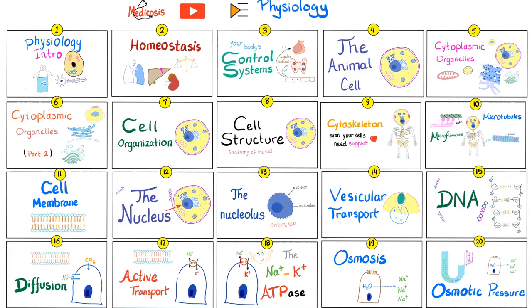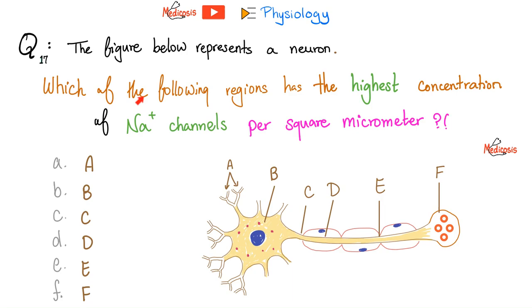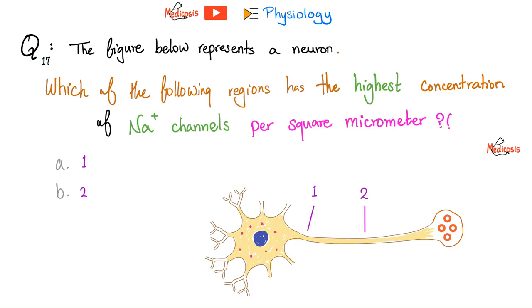In this physiology series, please watch these videos in order. Let's answer the question of the previous video. The figure below represents a neuron. Which of the following regions has the highest concentration of sodium channels per square micrometer? Most people said the answer is C, the axon hillock. Well, no — it's not C. Let me explain.